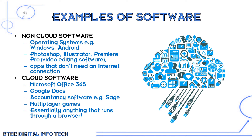Examples of cloud software are things like Office 365, Google Docs, some accountancy software used for finances and money management — Sage is an example — any multiplayer games you can play online, and basically anything that runs through your browser. When you're on Google Chrome going to certain things online, those are all cloud-based software.